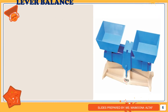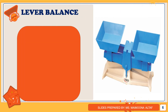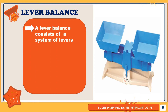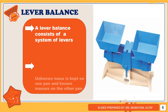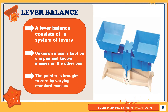The second type of balance consists of a system of levers. In this balance, two pans are attached. When the lever is lifted, the object is placed in one pan and the standard masses on the other pan. The pointer of the lever system moves, and the pointer must come to rest at the center position.